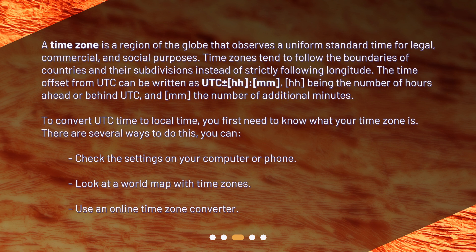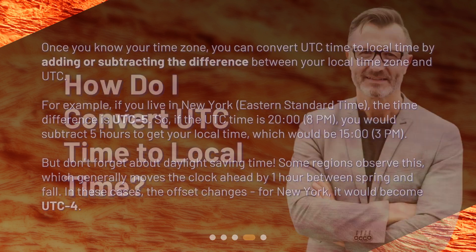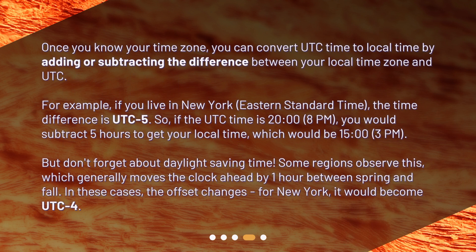To convert UTC time to local time, you first need to know what your time zone is. There are several ways to do this: you can check the settings on your computer or phone, look at a world map with time zones, or use an online time zone converter. Once you know your time zone, you can convert UTC time to local time by adding or subtracting the difference between your local time zone and UTC.